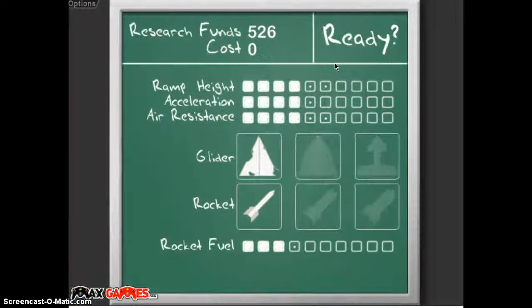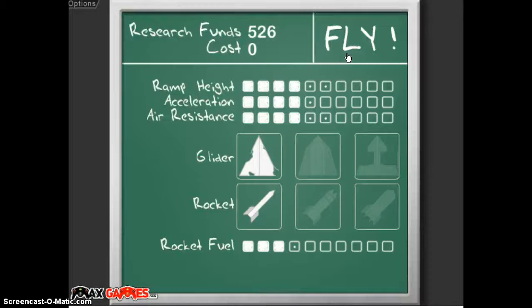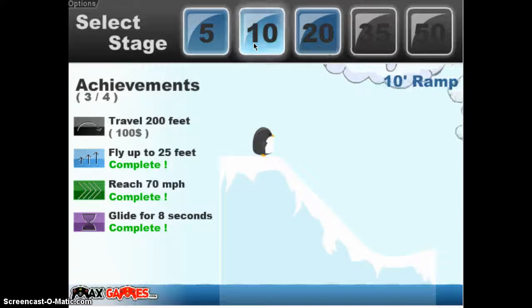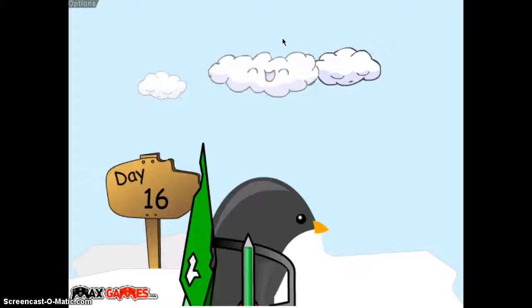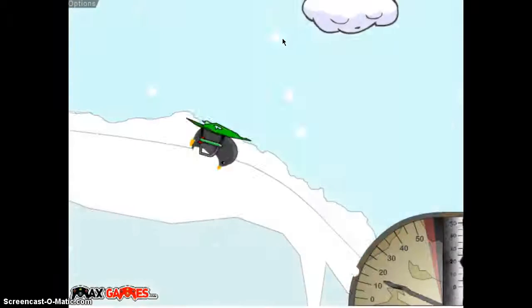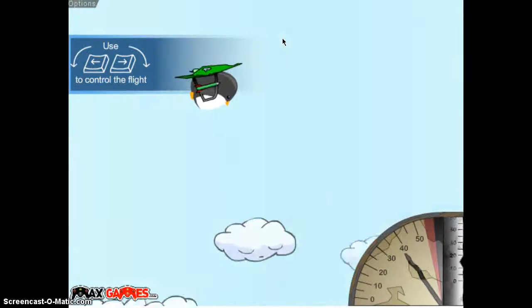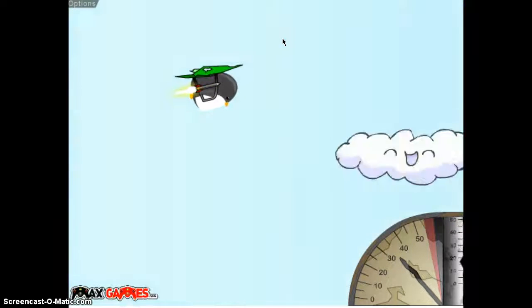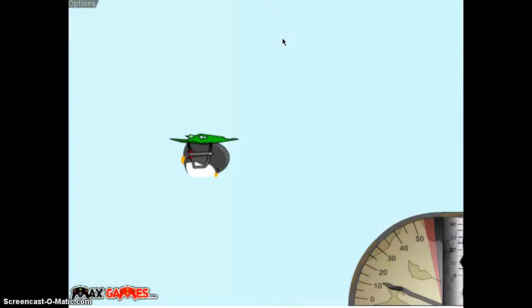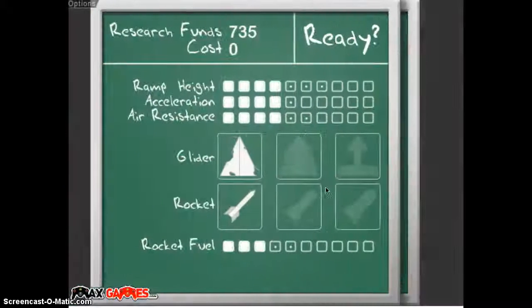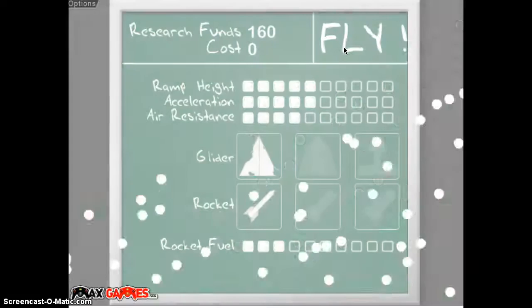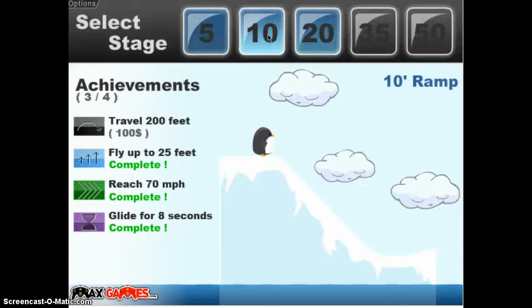I think I did go really far that time. Yay, I got it. I got the thing. So now I have a decent amount of money. I still need to travel 200 feet. I think I can use the glider and rocket to my advantage. I think I went 200 feet. I hope I went 200 feet.